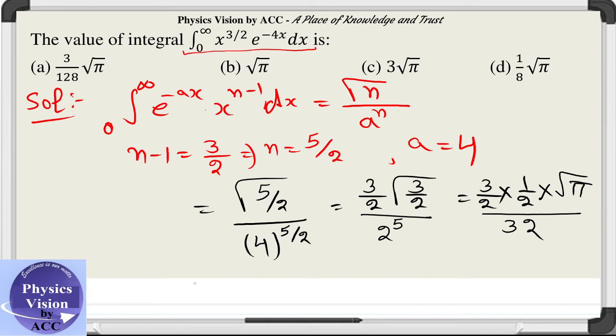Notice that we have made use of one formula which is gamma n is equal to n minus 1 gamma n minus 1, and another formula is gamma half is equal to under root pi.